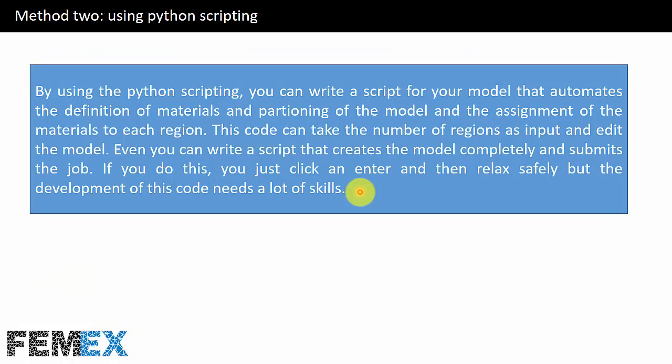Now I want to talk about method two, that is using Python scripting. By using Python scripting you can write a script for your model that automates the definition of materials, partitioning of the model, and the assignment of materials to each region. This code can take the number of regions as input and edit the model. You can even write a script that creates the model completely and submits the job — you just click, enter, and then relax. But the development of this code needs a lot of skills; you must know Python language and the rules of scripting in Abaqus.